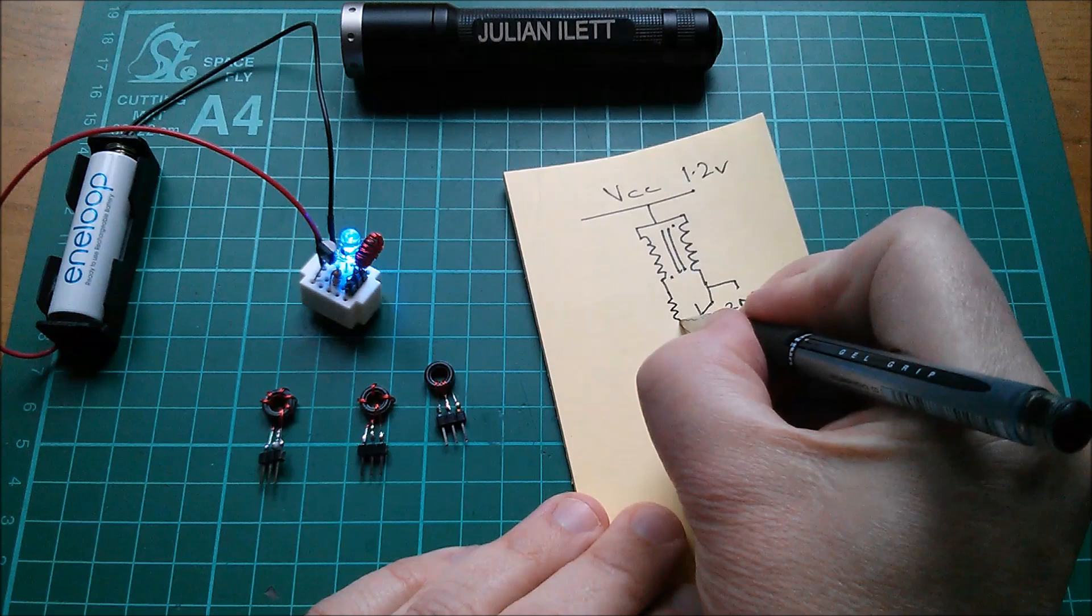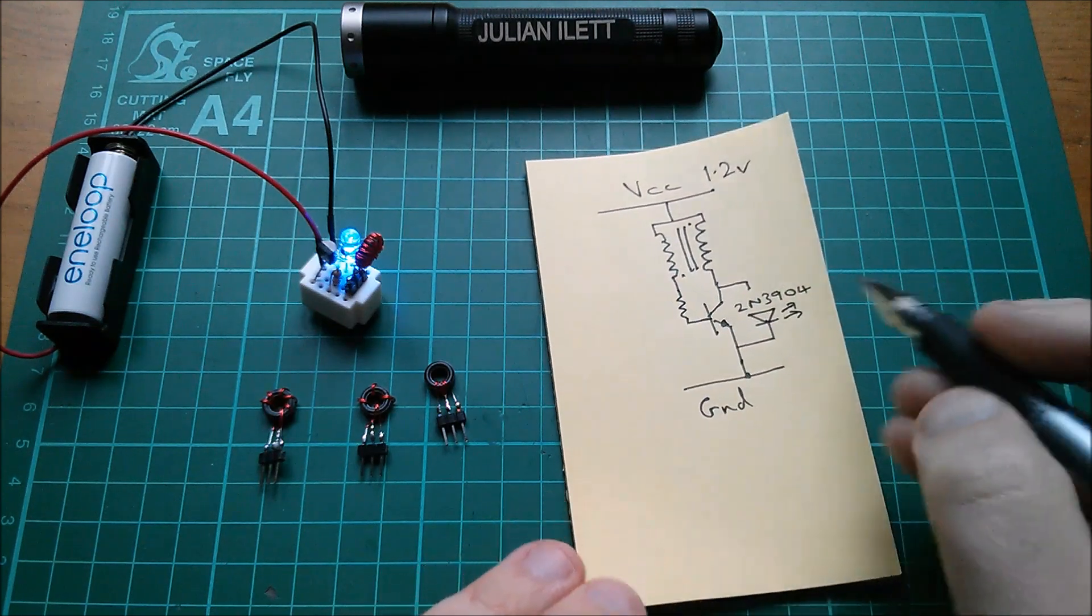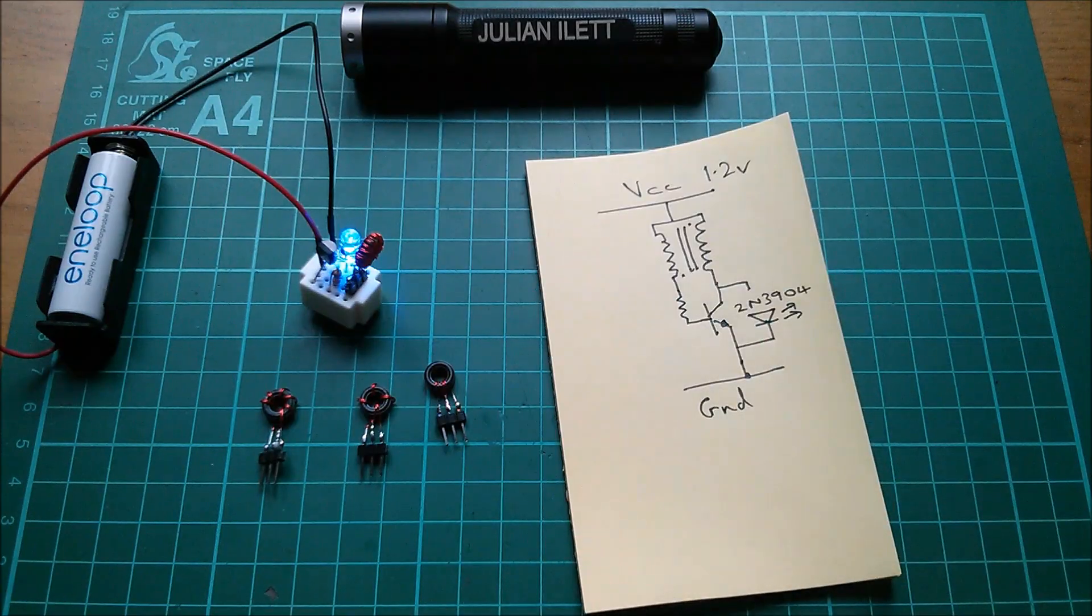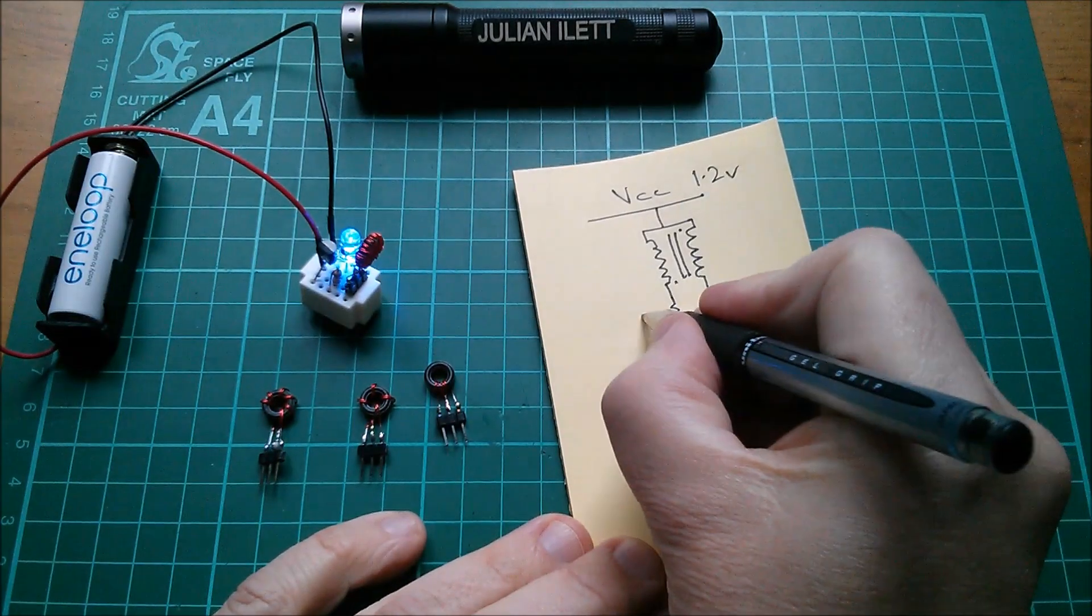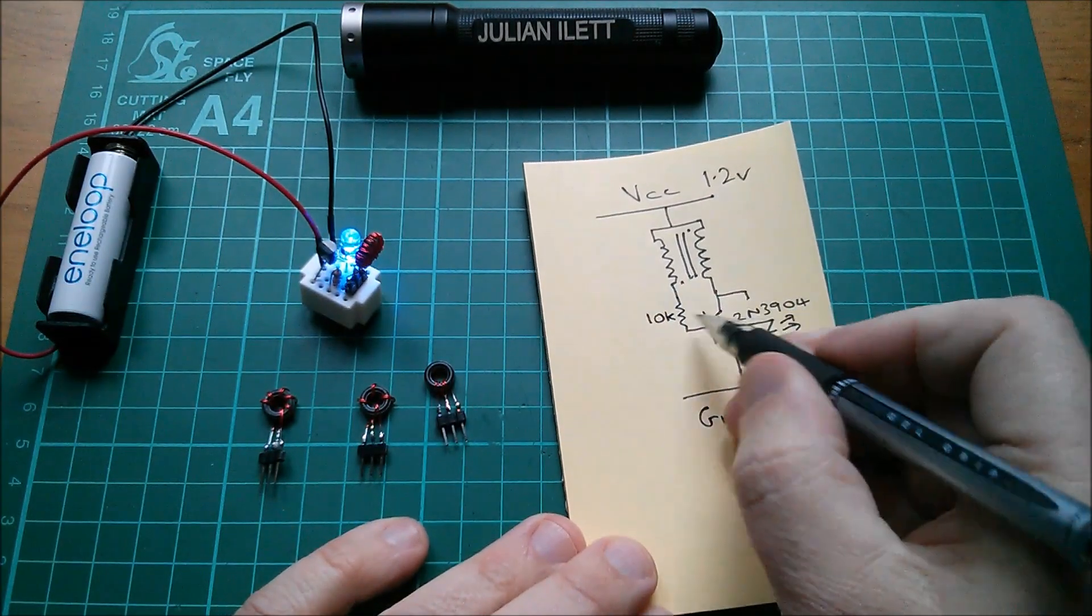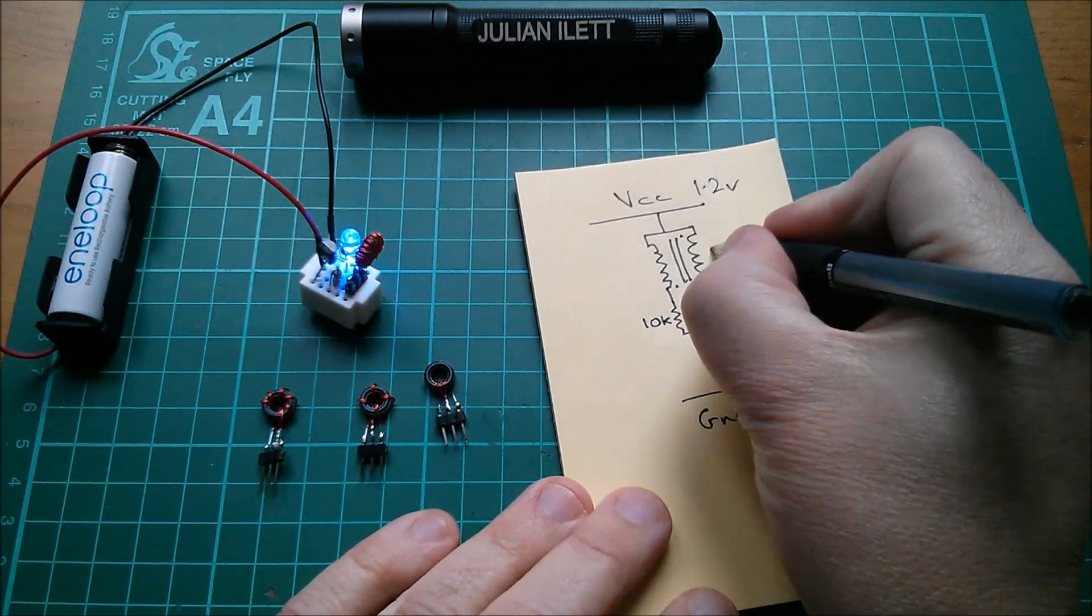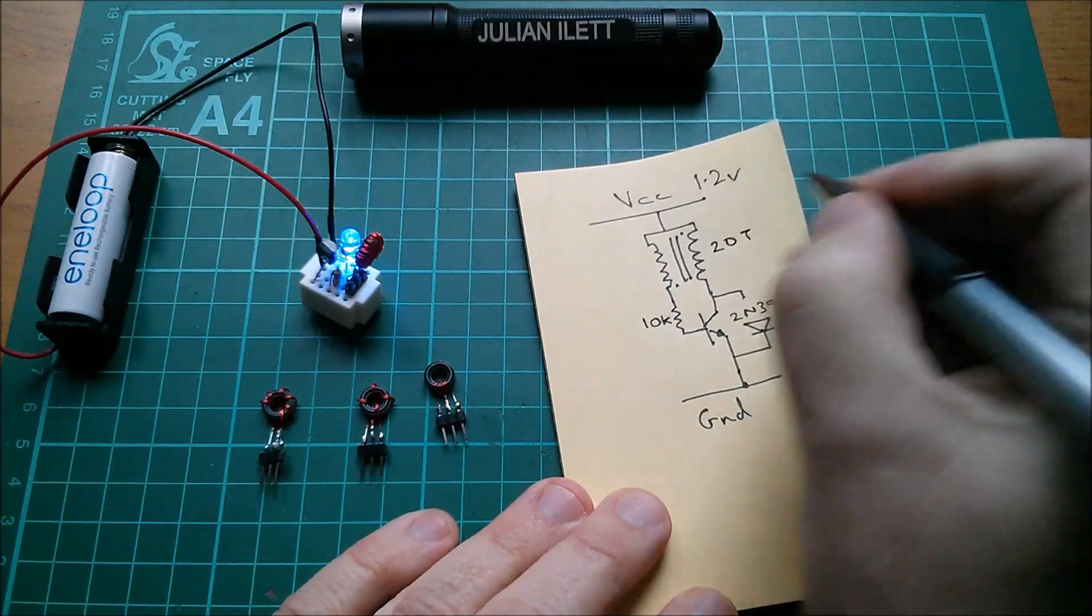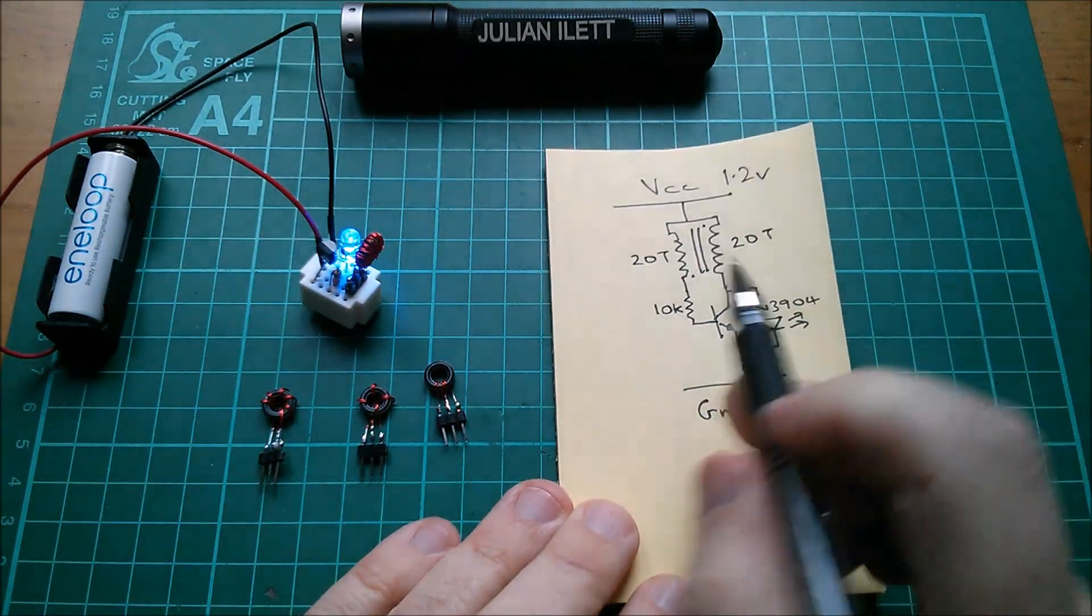Then we've got a resistor which goes to the base of the transistor, and that's really it for the joule thief circuit diagram. Other than to label my resistor, now at the moment I'm using a 10k, but we'll try different values. And here I've got 20 turns, 20T, and 20 turns. So we've got 20 turns on both sides of this little transformer.